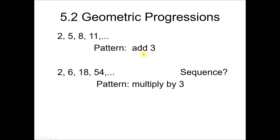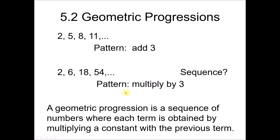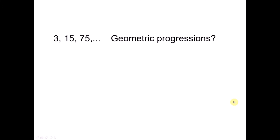This is also considered as a sequence because for the next term you just multiply the previous term by 3. For this type of progression we call this a geometric progression, where you get the following terms by multiplying the previous term with a number. If arithmetic progression we add; if geometric progression we multiply.